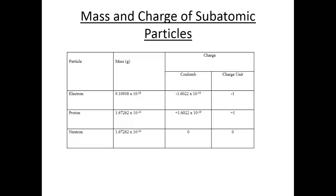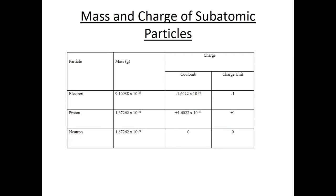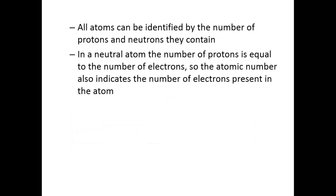That is a short summary of the mass and charge of subatomic particles. Starting with electrons: their charge unit is negative. Protons have a positive charge. Neutrons are neutral — zero charge. All atoms can be identified by the number of protons and neutrons they contain. In a neutral atom, the number of protons is equal to the number of electrons, so the atomic number also indicates the number of electrons present.